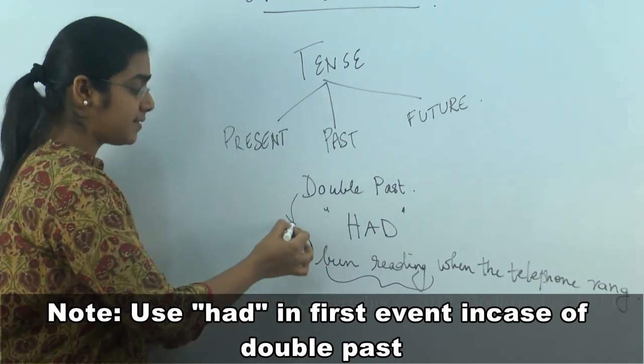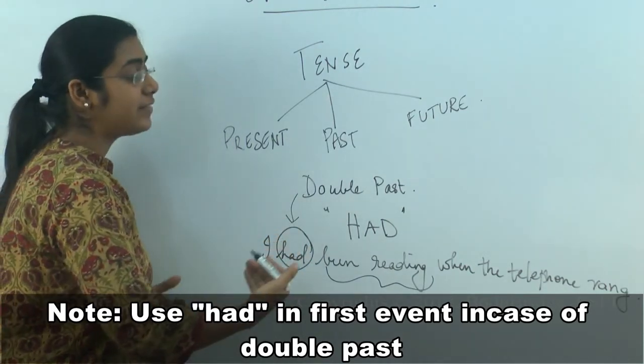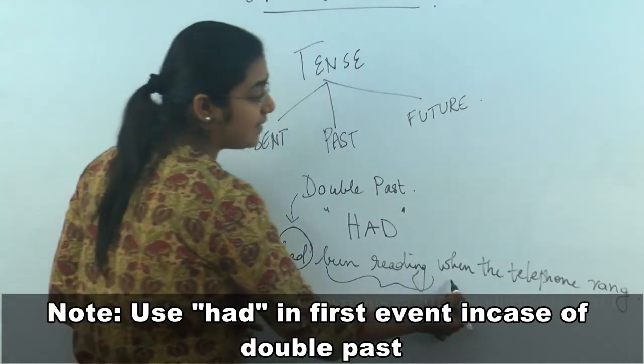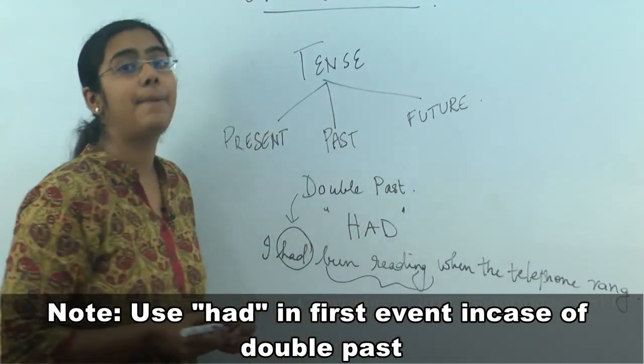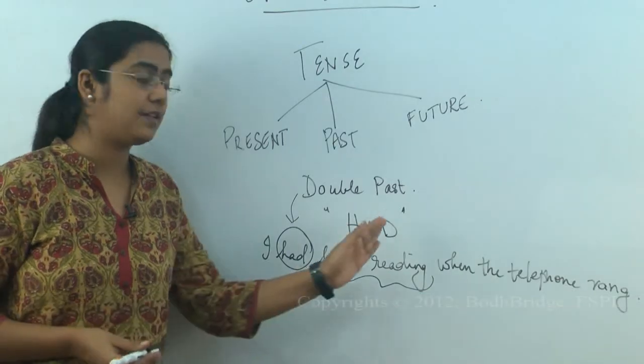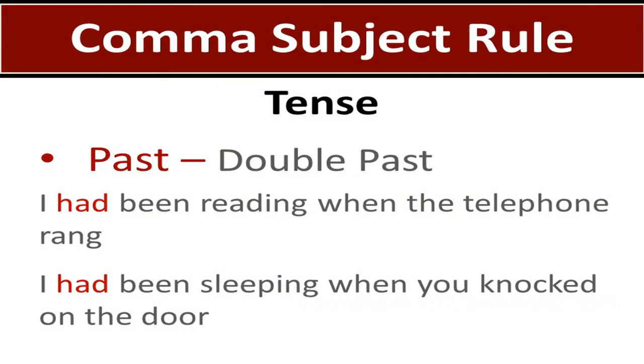And then, whatever happened next, you state it. It's in simple past tense. The telephone rang. I had been reading when the telephone rang. I had been sleeping when you knocked on the door. This is about double past. This is what you need to keep in mind when you deal with past tense in error identification exercises.